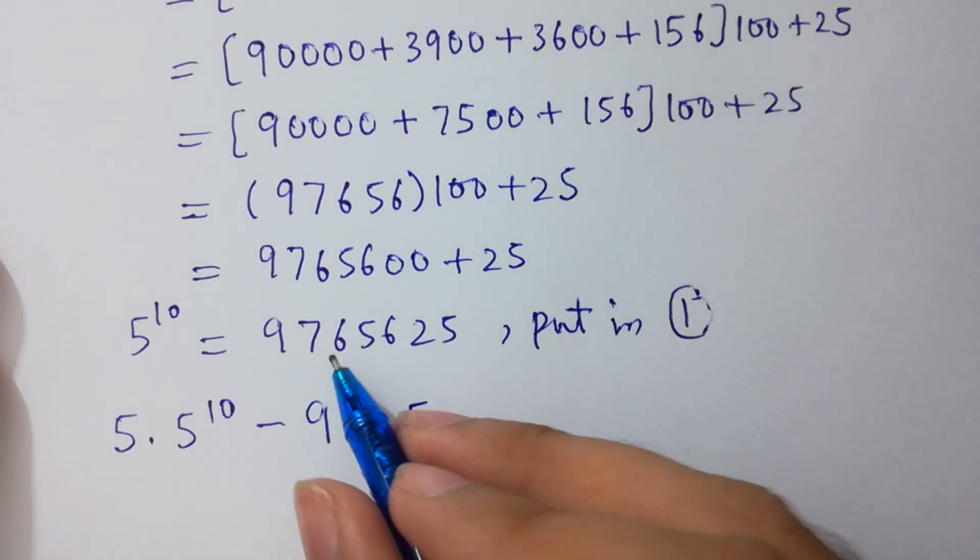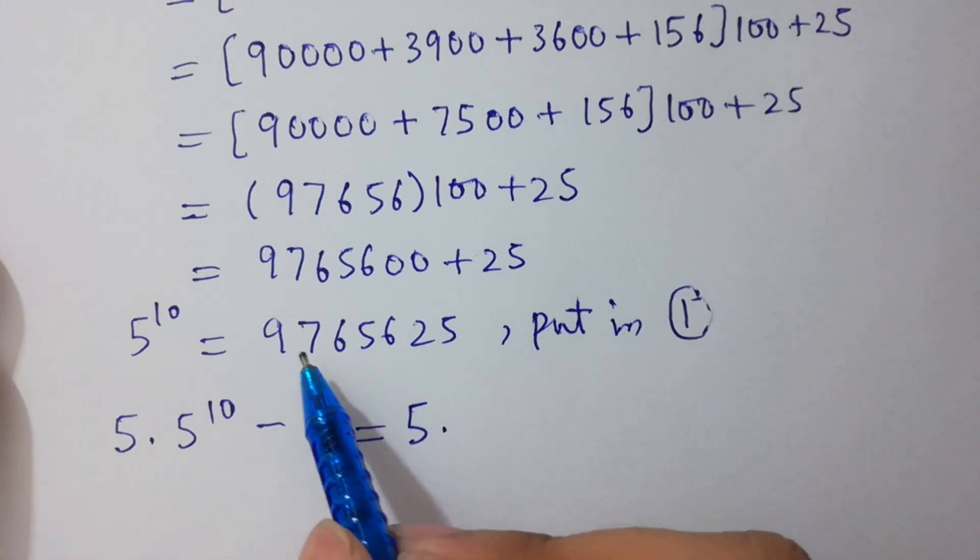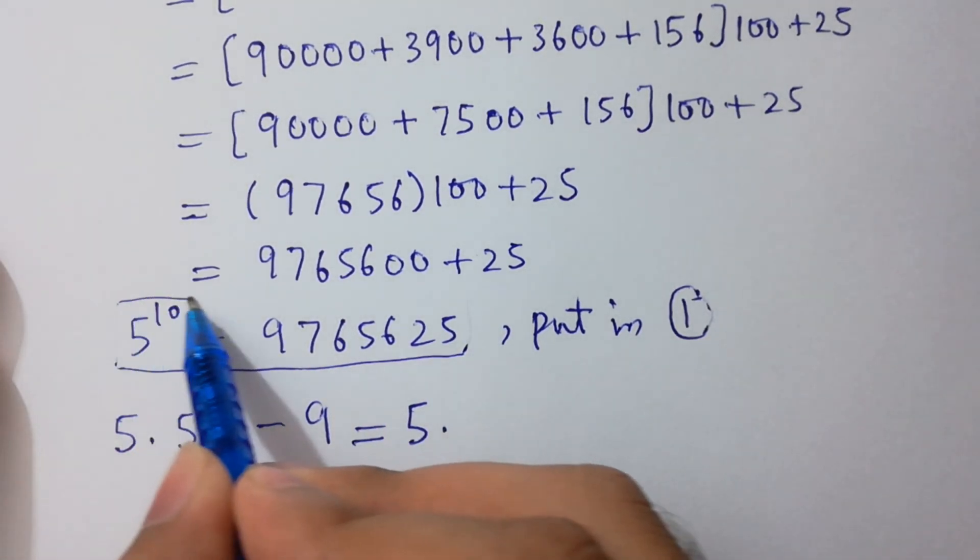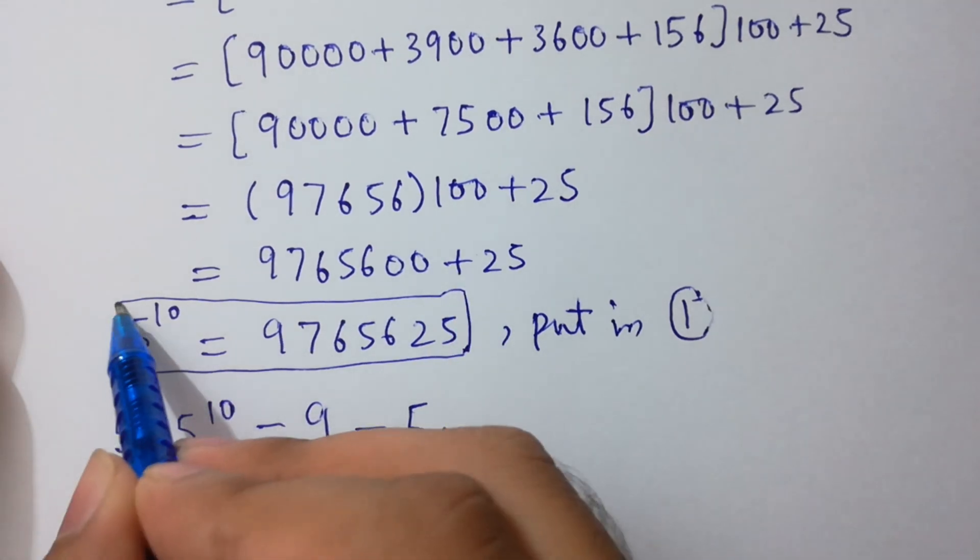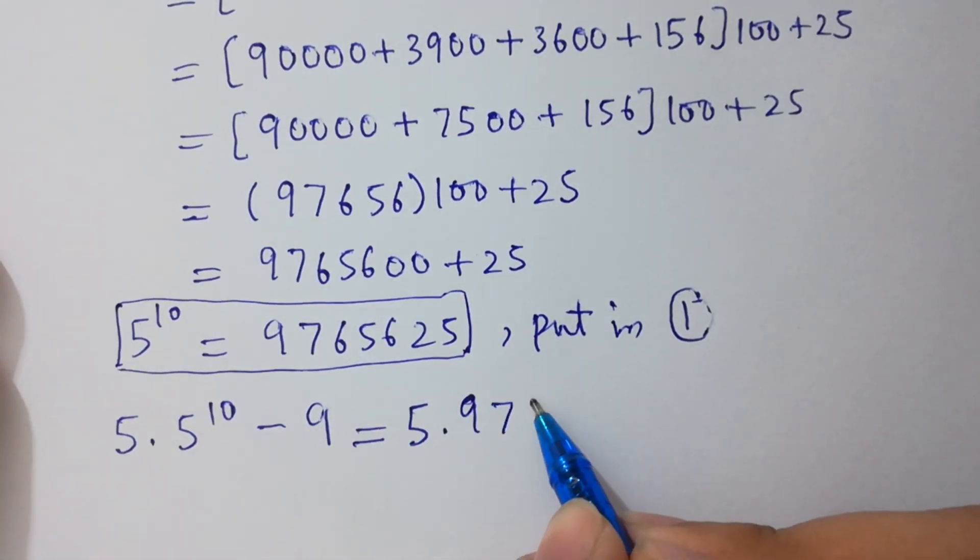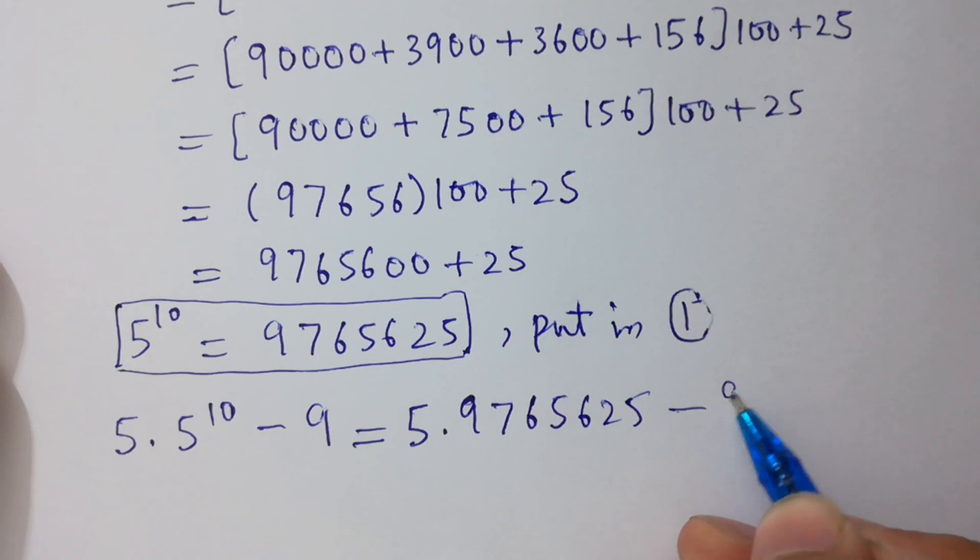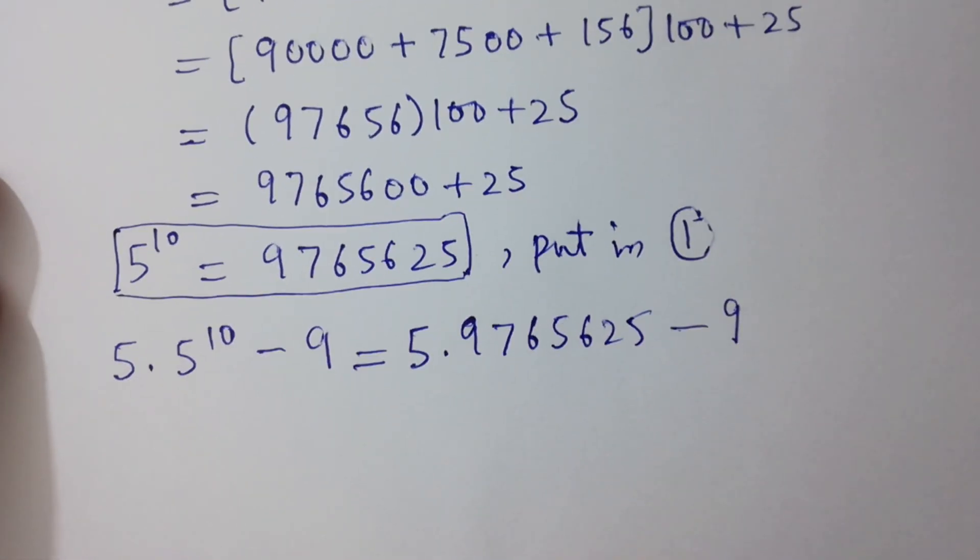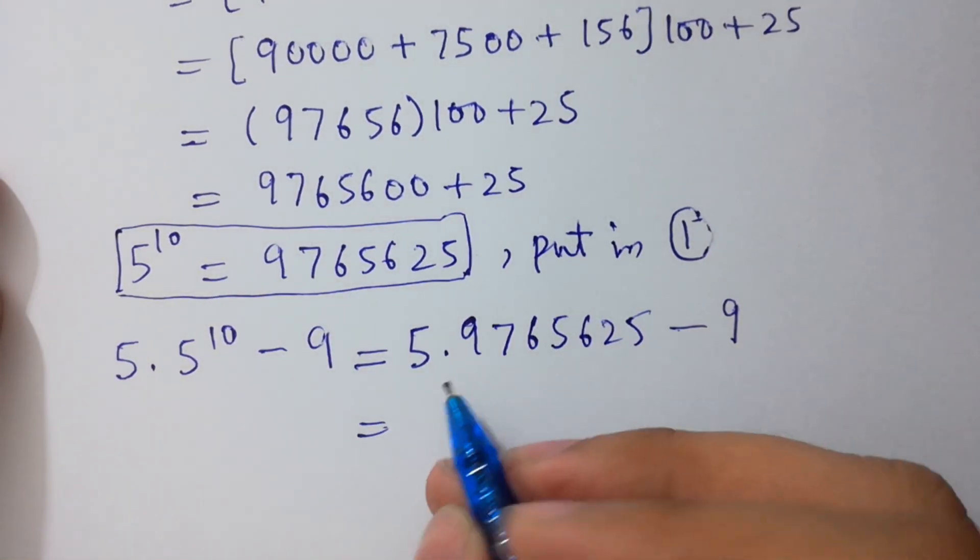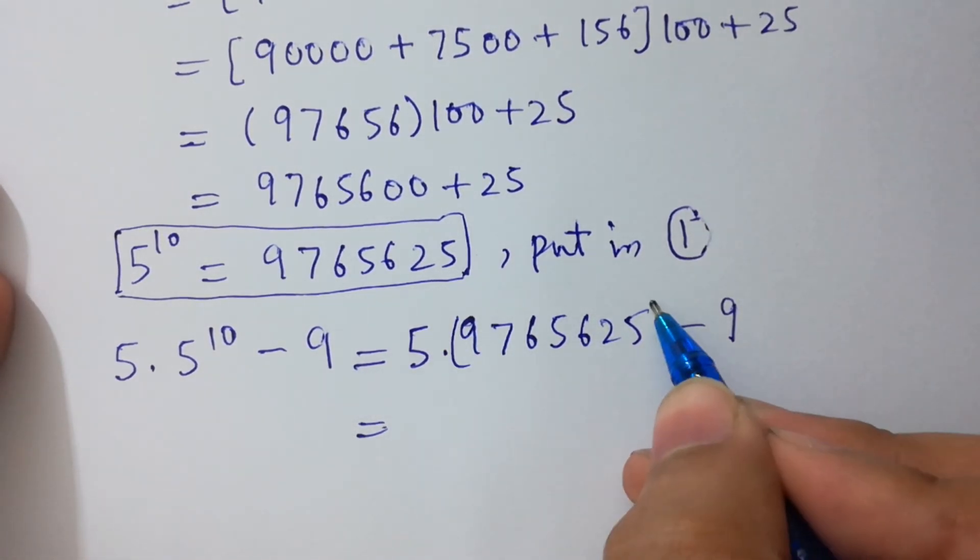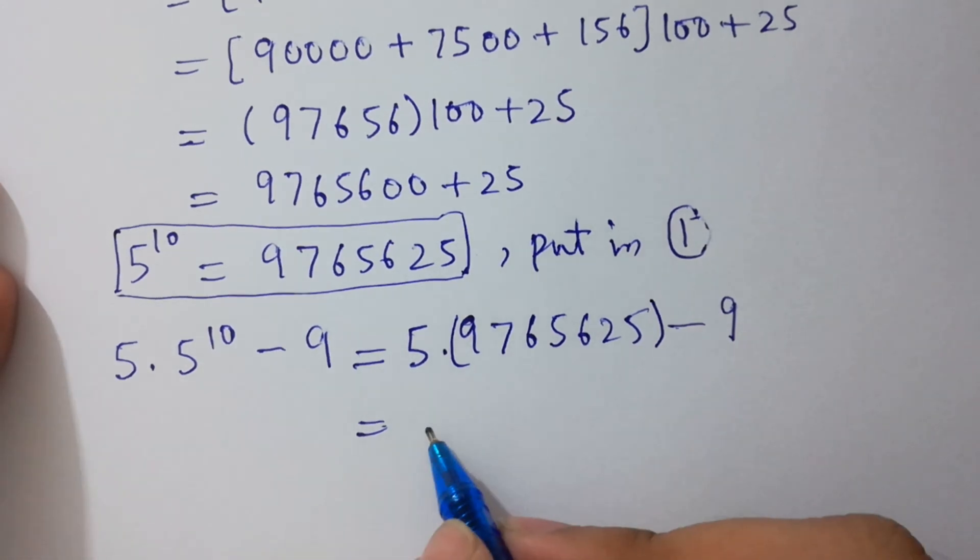5 times 9,765,625 minus 9. So here, 5 times 9,765,625 equals 48,828,125.